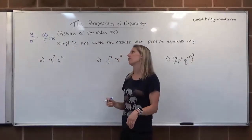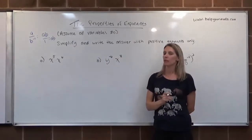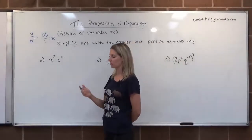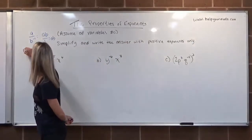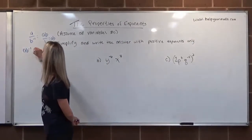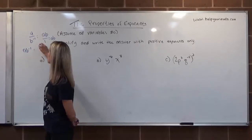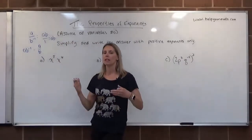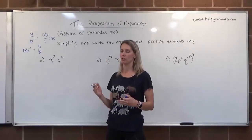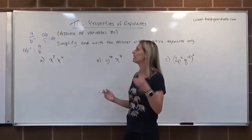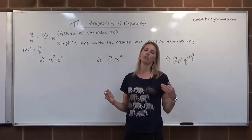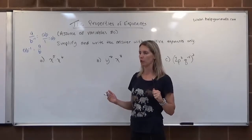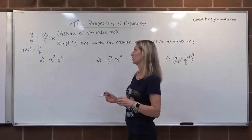If we have an exponent that's negative in the numerator, we can make it positive by moving that factor down to the denominator. So AB to the negative 1 becomes 1 over AB. The shortcut: negative exponent in the denominator becomes positive in the numerator; negative exponent in the numerator becomes positive in the denominator.